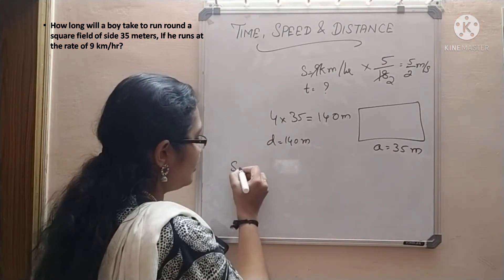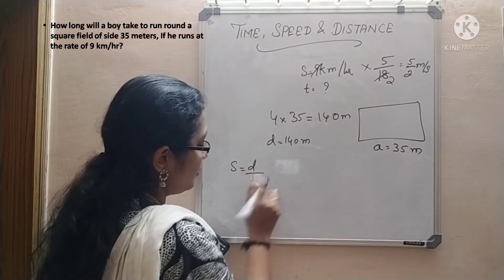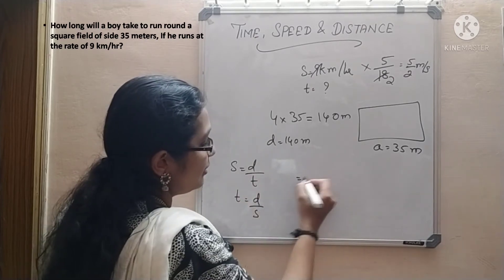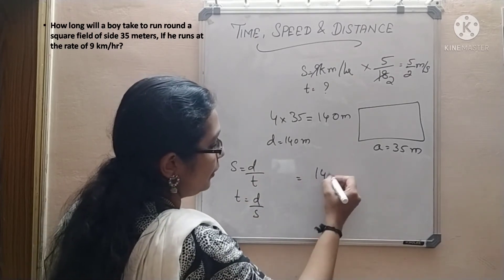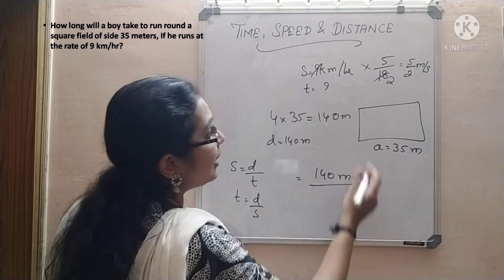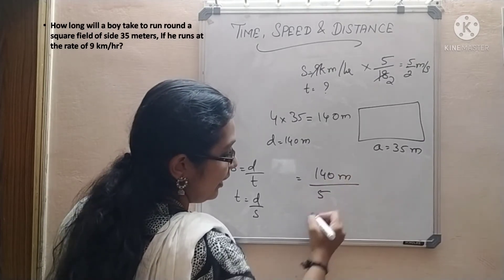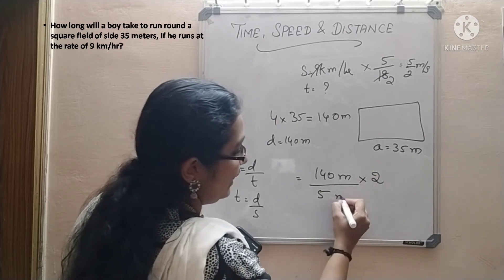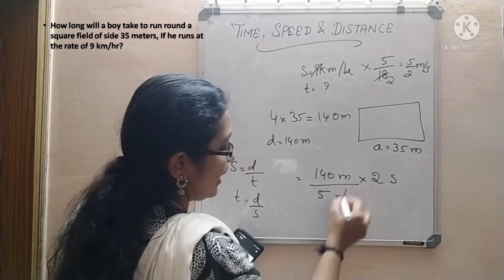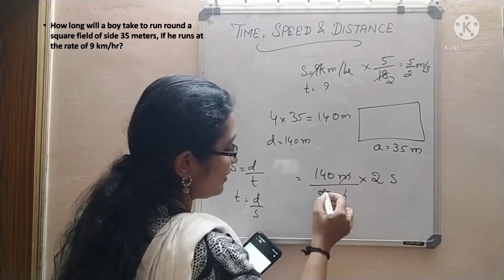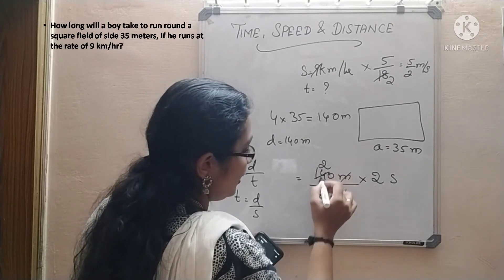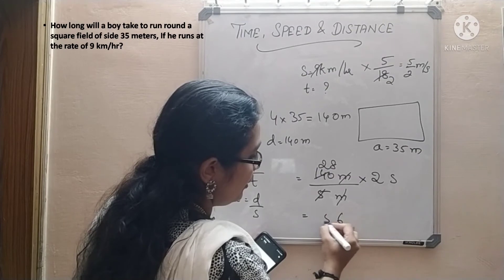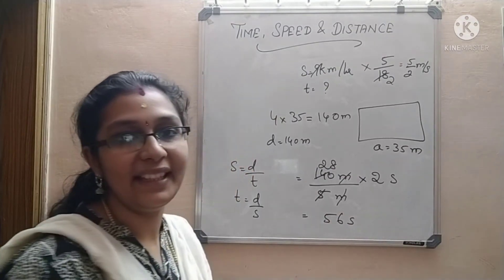Now we can substitute. Time = distance / speed = 140 ÷ (5/2) = 140 × (2/5). Meters cancel out. 140 × 2 = 280, divided by 5 = 56 seconds. So the boy takes 56 seconds to run around the square field.